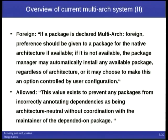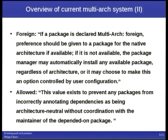For 'allowed', the definition says: 'This value exists to prevent any packages from incorrectly annotating dependencies as being architecture neutral without coordination with the maintainer of the depended-on package.' What this actually means is we wanted to allow packages to declare this information on their dependencies but we were afraid to do so and it might have broken our archive, so we have this flag that says: 'my reverse dependencies are now allowed to do something fancy.' How did we get there?